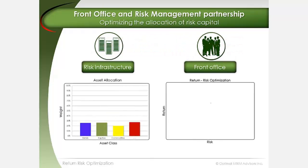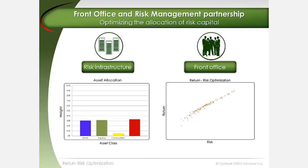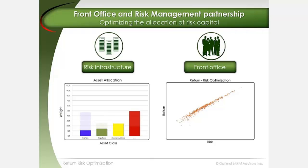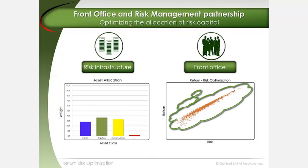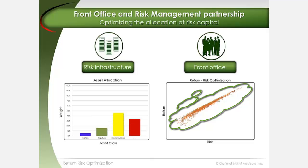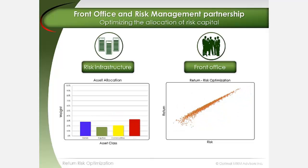Portfolio optimization helps to solve for the most ideal combinations or attributions of different asset classes that have the highest return-to-risk ratio. The optimization exercise generates a cloud of portfolio return versus risk coordinates. Portfolios with the highest return-to-risk ratio represent what is known as the efficient frontier.